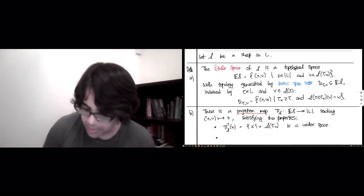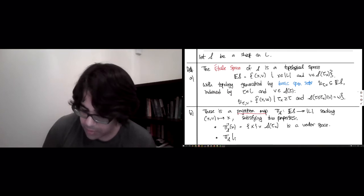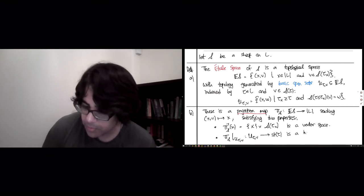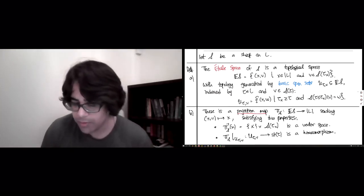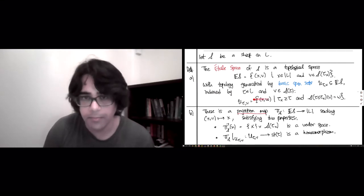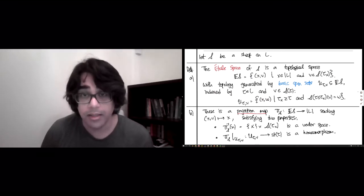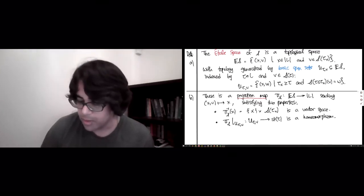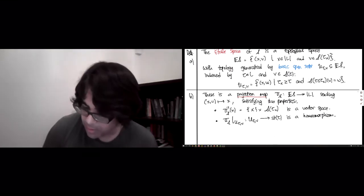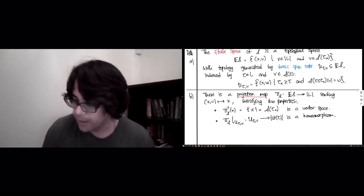And two, the other property that's nice, is that the restriction of pi s to any of these basic opens u tau v gives a map from tau v to the star of tau, which is a homeomorphism. So each of these basic open sets u tau v, which were used to generate the topology, each of them, when you attack it with the projection map pi, is going to give you a homeomorphism onto the open star of tau. So I guess this is a topological open star, so I should write it like this.